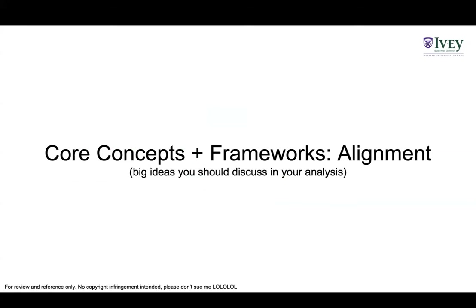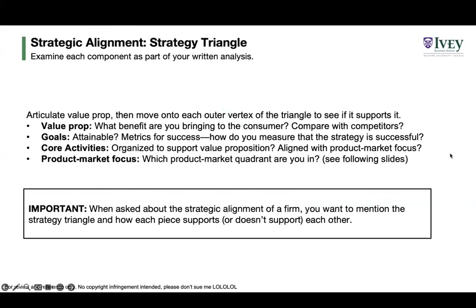Now let's talk about alignment. There are key components of the strategy triangle — I generally think it's a good idea to start with a value proposition and then see how the rest of the triangle supports it. Your value prop is the benefit you're bringing to the customer and how it compares to competitors. Support it with the three vertices: check if your goals are attainable, what metrics you can use to measure success, and how you can modify your core activities and product-market focus to achieve those goals.